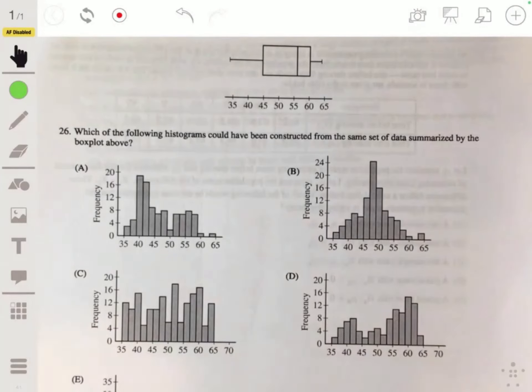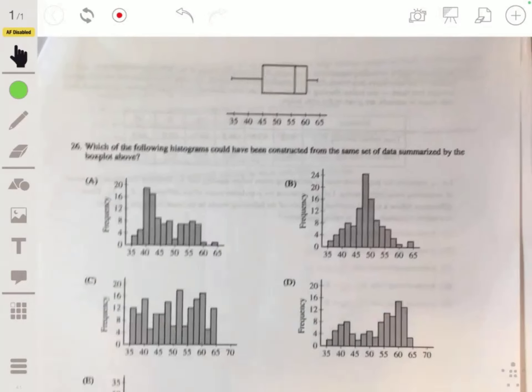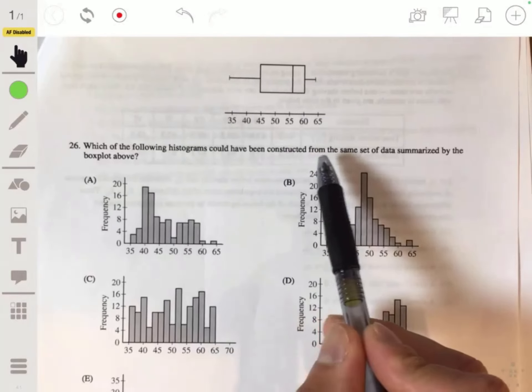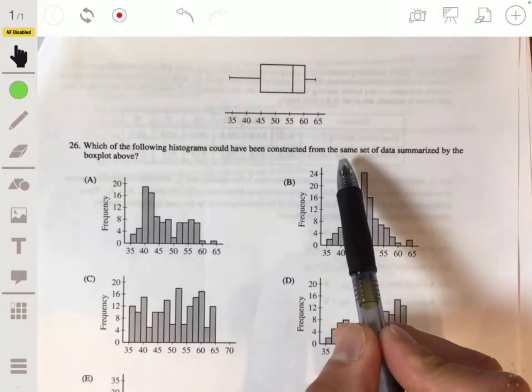Alright, picking up on problem 26 of the 2017 practice exam. Which of the following histograms could have been constructed from the same set of data summarized by the box plot given above?